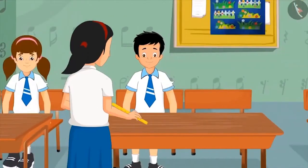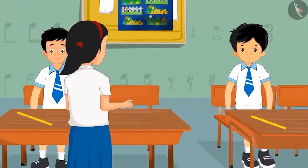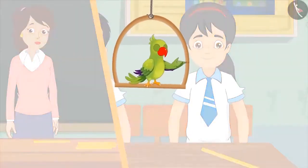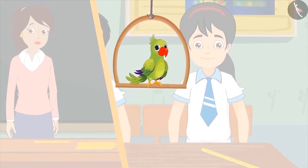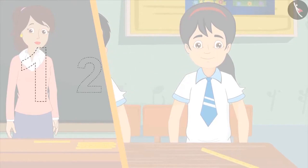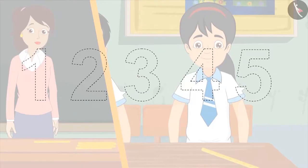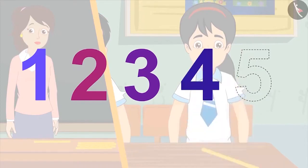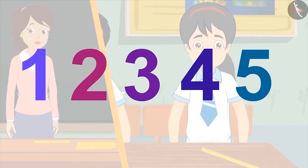The teacher says: Very good Pinkie. Now give 1 flute to 1 child and keep 1 for yourself. Then Pinkie gives a flute to each child one by one and keeps one for herself. The teacher then explains: you have seen how each number is written as a special symbol. We write 1 like this, 2 like this, 3 like this, 4 like this, and 5 like this.